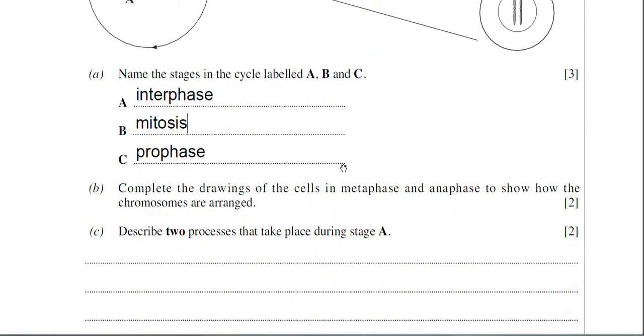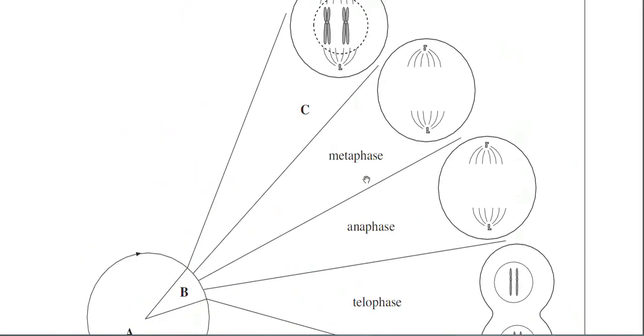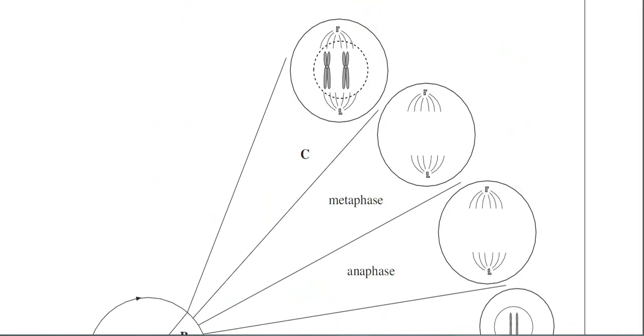Going on to part B then. The examiner wants you to complete the drawings of the cells in metaphase and anaphase to show how the chromosomes are arranged. So let's scroll up then to metaphase. What the examiner has done there is he's got the spindle fibres in place. These are the spindle fibres there. These at the top are the centrioles.